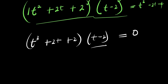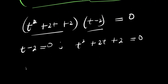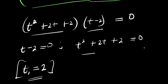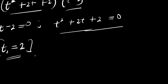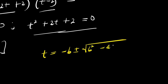We start with the simpler one, which is t minus 2 equals 0. And also we have t squared plus 2t plus 2 equals 0. To solve this quadratic, we are going to make use of the quadratic formula method. So we write the formula in respect to t: t equals negative b plus or minus square root of b squared minus 4ac, divided by 2a.